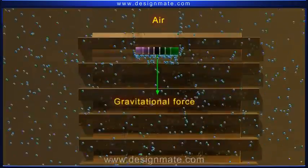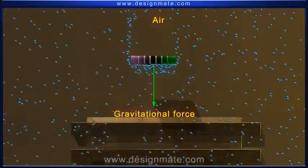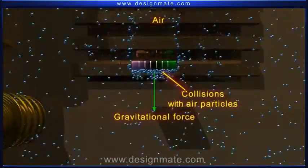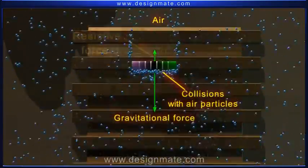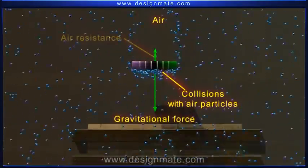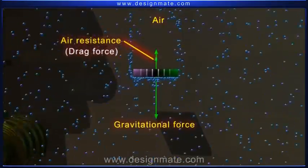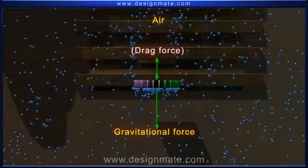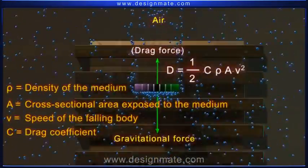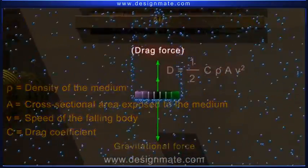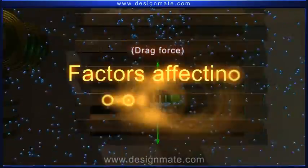Besides gravitational force, the object in air experiences collisions with air particles. These collisions give rise to a resistant force called air resistance or drag force acting in the direction opposite to that of the motion. Drag force is given by the equation d equals 1 half c rho a v square. Let us now study the factors affecting drag force.